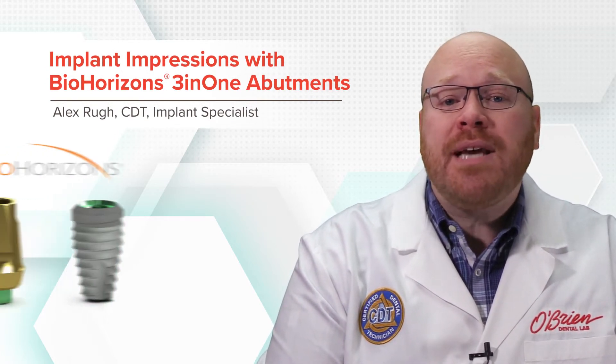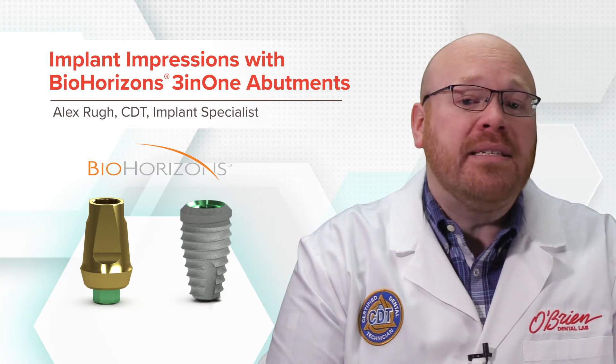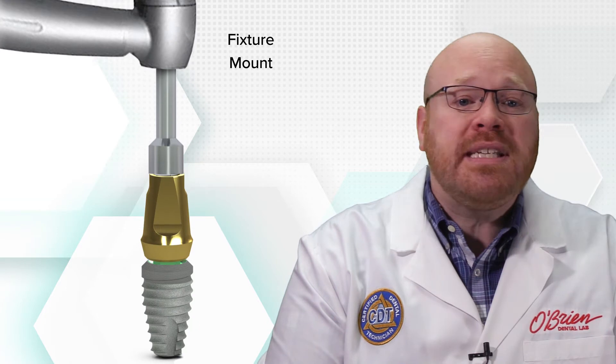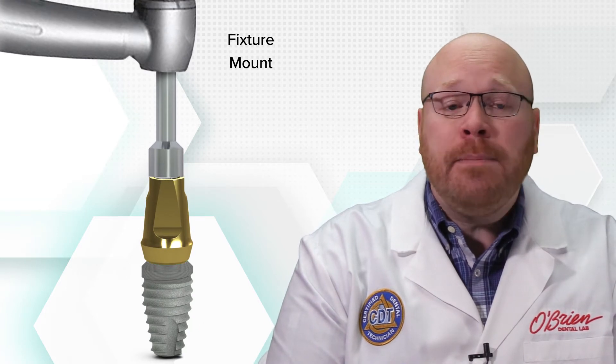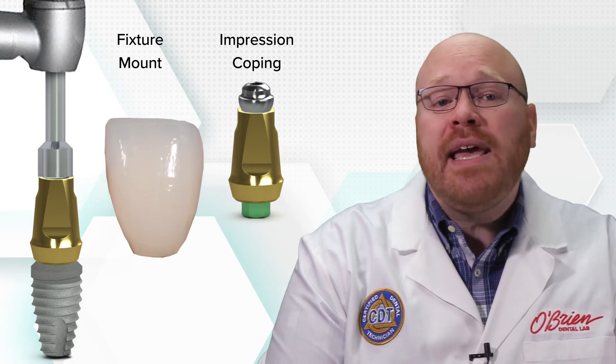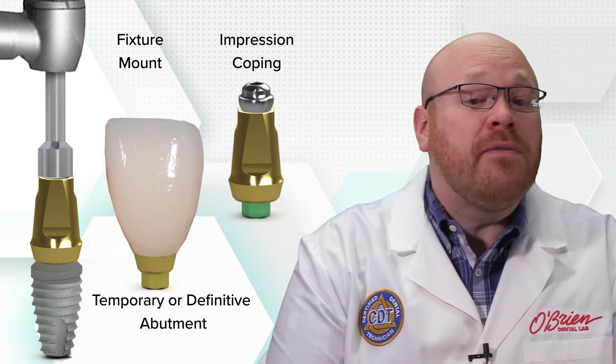The 3-in-1 abutments come packaged with many of the BioHorizons implants, and as the name implies, they serve three functions. First, they're used as a fixture mount for placing the actual implant. Second, they can be used as an impression coping. Finally, they can be used as either a temporary or definitive abutment.